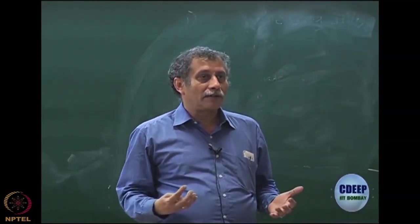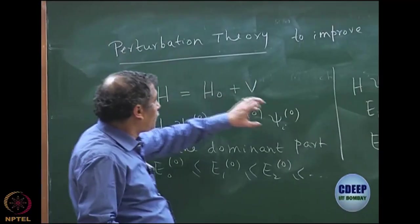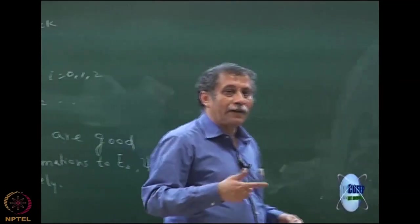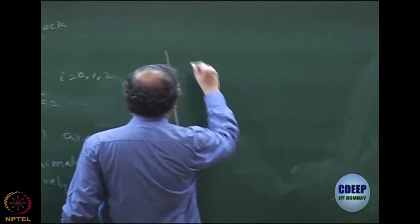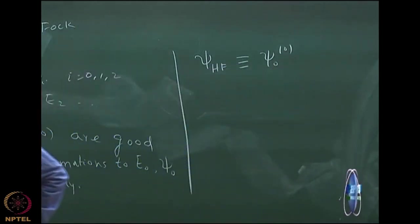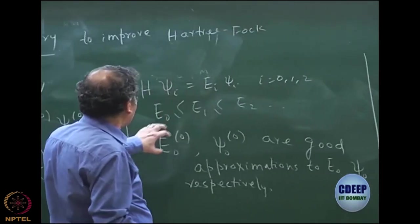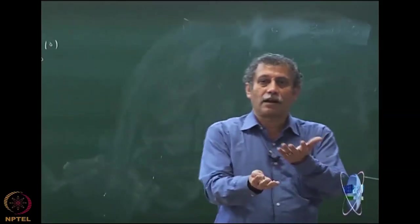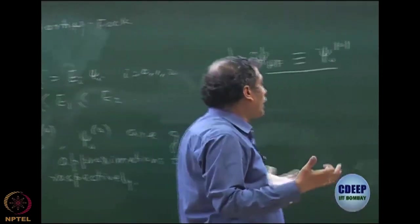So my first task is to have a Hamiltonian split into H0 plus V. We notice that we have a wave function which is a pretty good approximation to the exact wave function — we already have one: the Hartree-Fock wave function. So can I make Hartree-Fock as the ground state wave function of some Hamiltonian? Can the Hartree-Fock Slater determinant be ψ₀⁰? From our experience, we know that E₀⁰ captures 95–97% of the total E₀.